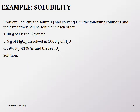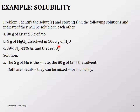Let's look at an example. Identify the solute and solvent and indicate if they will be soluble. First: 80 grams of chromium and 5 grams of molybdenum. The solute is the smaller amount — molybdenum — and the solvent is chromium. Will they be soluble? Yes — both are metals and solids, so they will form an alloy.